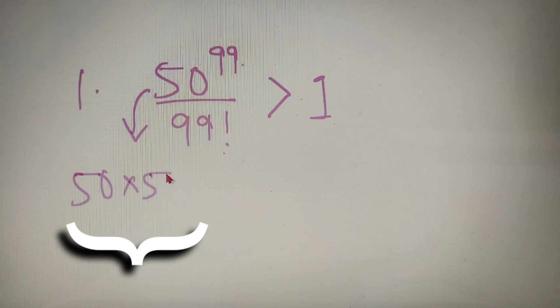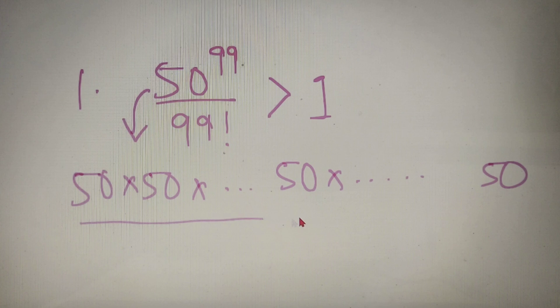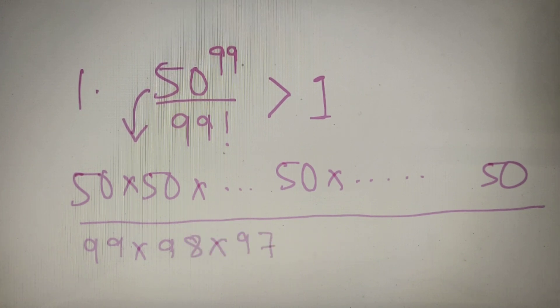So let's assume that 50 to the power 99 is greater than 99 factorial. So I have to prove that this fraction is greater than 1. Now instead of 50 to the power 99, I can write it down as 50 into 50 into all the way up to the middle term 50, which will be the 50th term, and all the way up to the 99th term 50. Now in the denominator I have 99 factorial, which can be further simplified as 99 into 98 into 97 into 96 all the way up to the number 1.